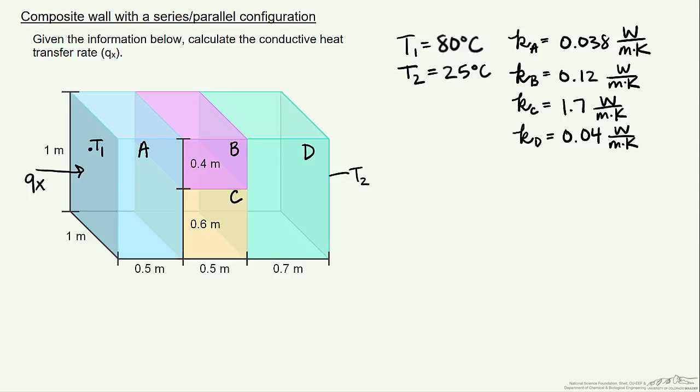So instead of having a straight thermal circuit, we're going to have something that looks like this. We have our heat transfer rate in the x direction, and we start with our T1, which is the temperature on the first outside wall.